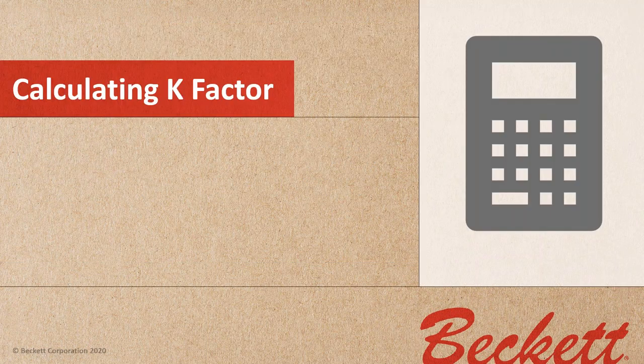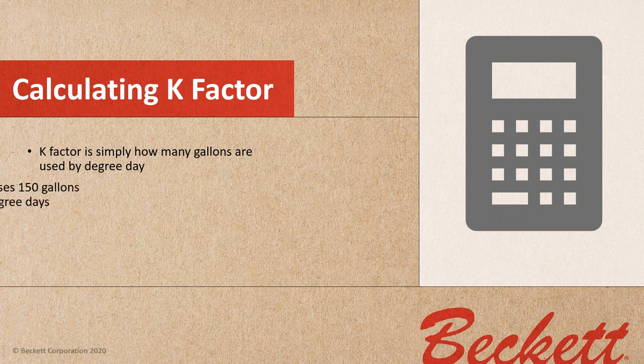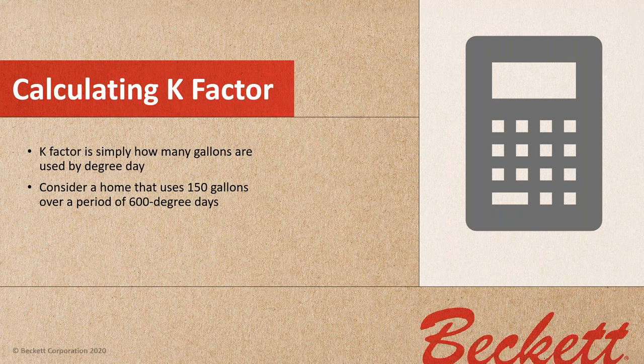The next step is calculating the customer's K-factor. The K-factor is simply how many degree days are needed per gallon used. Consider a home that uses 150 gallons over a period of 600 degree days. We take 600 divided by 150, which equals 4. So the K-factor for that home is 4.